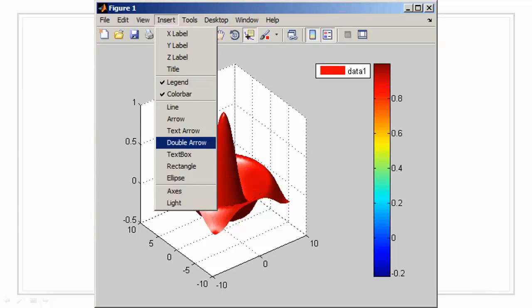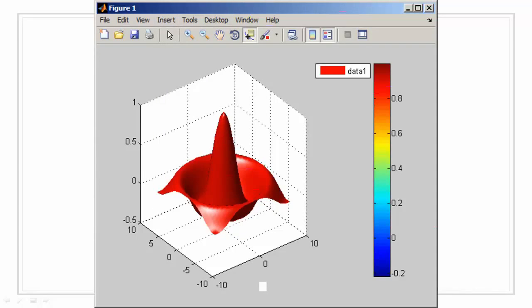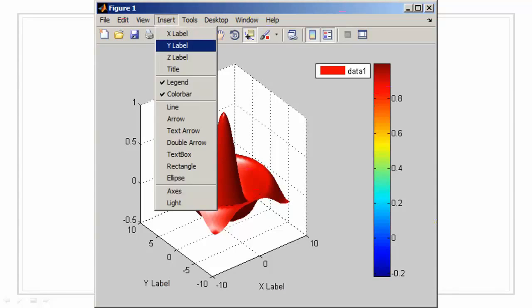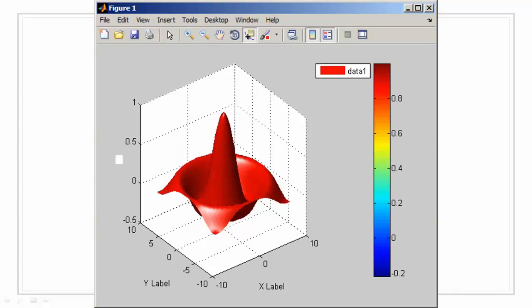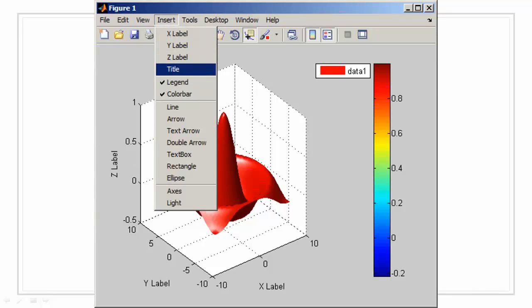In insert menu, we can add the x label, like we do in the script. I am just going to write x label. Similarly, we can add the y label using the insert menu, I will just write y label. We can also add the z label, I will write z label. And we can add the title, for example surface plot.